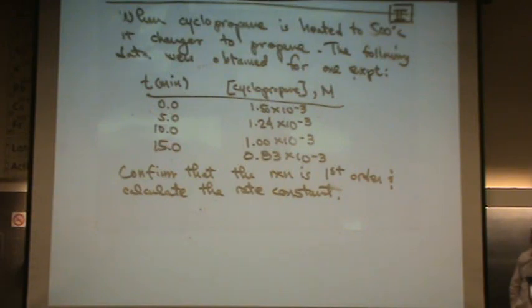So we got time in minutes: 0, 5, 10, 15. Then the cyclopropane concentration, cyclopropane is the reactant, in molarity: 1.5, 1.24, 1, and 0.83, all times 10 to the minus 3.